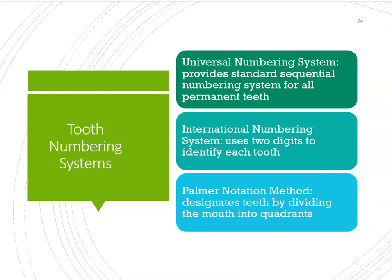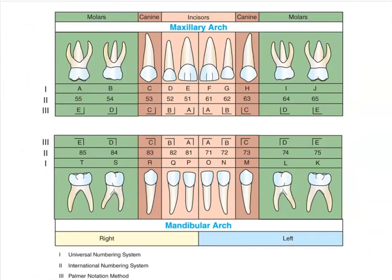Tooth numbering systems are important to note for the board exam. In Canada, we use the FDI or international numbering system, but in the States they may use the universal numbering system. Palmer notation is another system to note. For primary teeth, universal numbering uses alphabets — you start with the upper right and go all the way around, noted alphabetically from A to T.